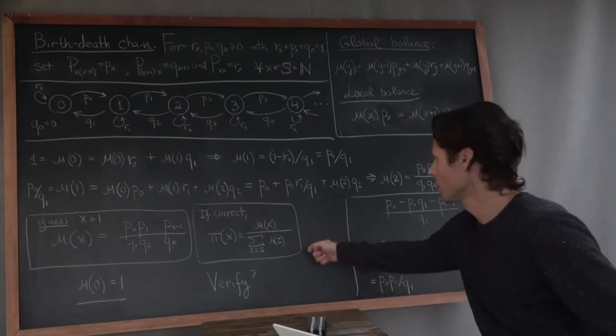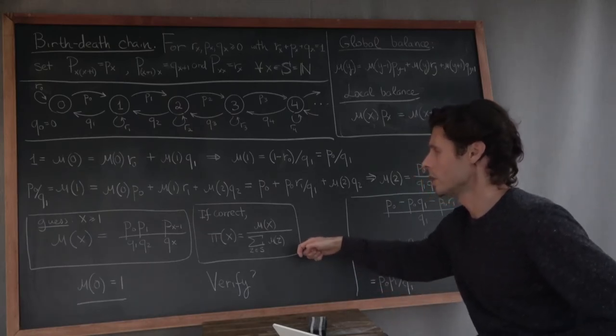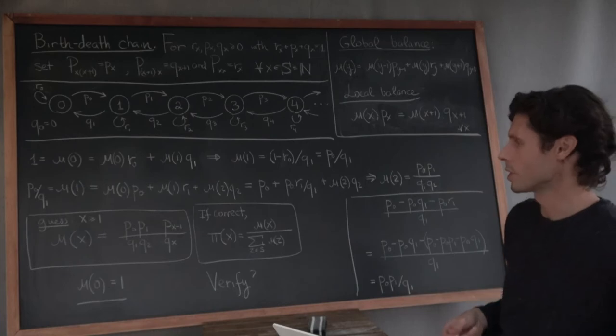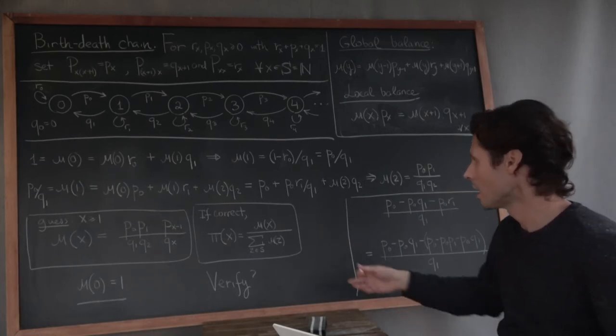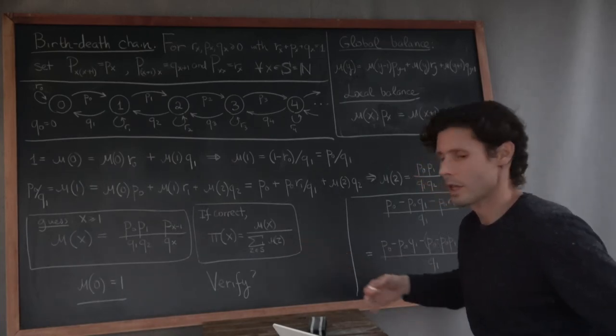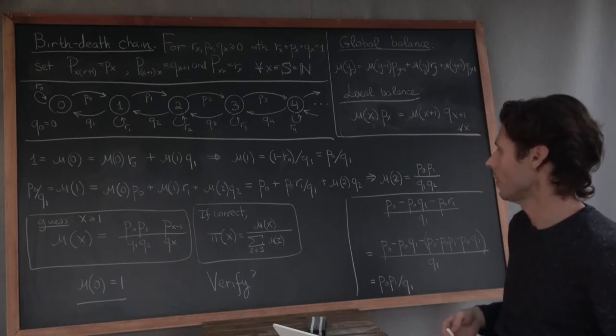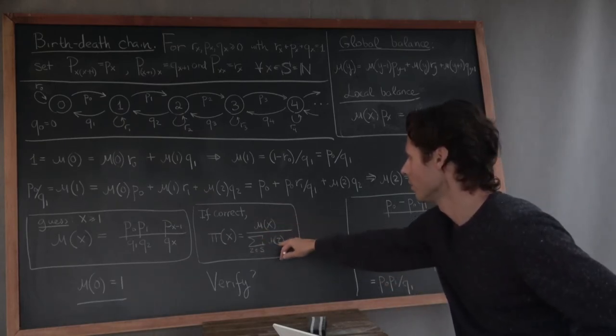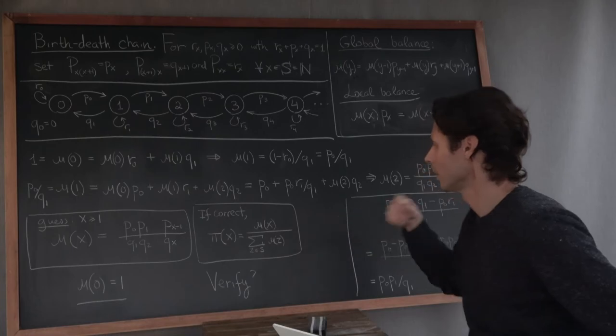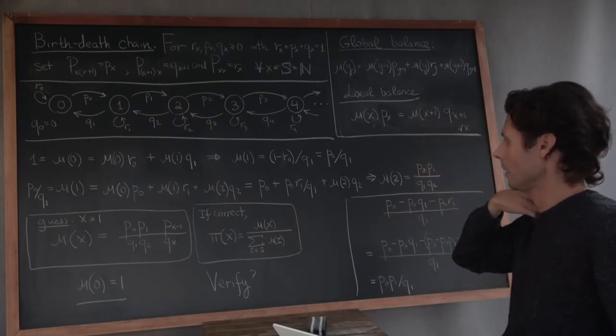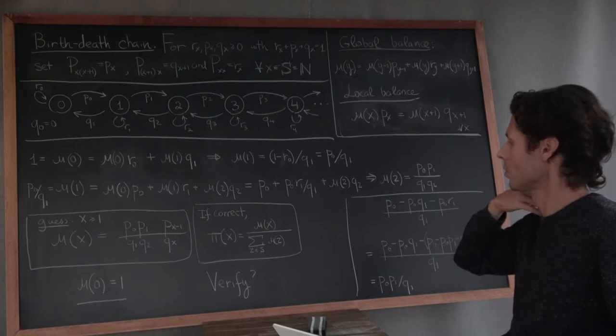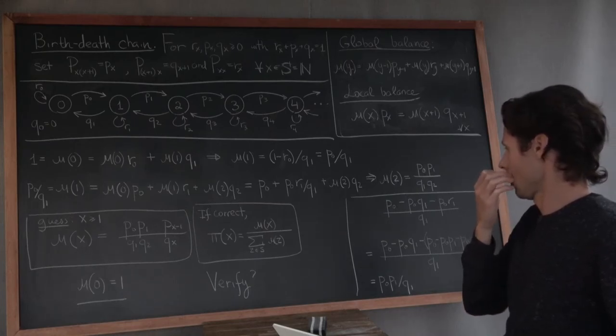These are the equations that we actually started writing out here before making this guess. This formula certainly satisfies them. You can verify that. But more simply, this formula satisfies the local balance equations. Once you have the stationary measure, sorry, once you have the stationary measure, this mu that satisfies global balance, you have the stationary distribution right here. This also satisfies global balance, and it sums to one, making it a stationary distribution.